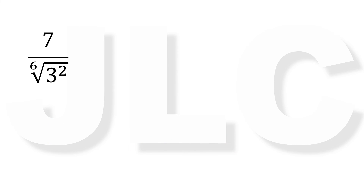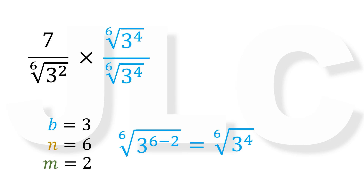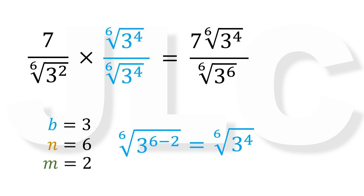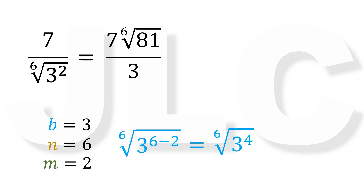Let's have one more example. If we have 7 over 6th root of 3 squared, then b equals 3, n equals 6, and m equals 2. So we multiply the numerator and denominator by 6th root of 3 raised to 6 minus 2, equals 6th root of 3 raised to 4. So we have 7 over 6th root of 3 raised to 4, over 6th root of 3 raised to 4, equals 7 times 6th root of 3 raised to 4, over 6th root of 3 raised to 6, equals 7 times 6th root of 81 over 3. So that's how you rationalize the denominator.